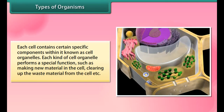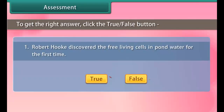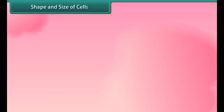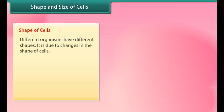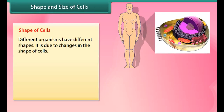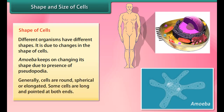Each living cell has the capacity to perform certain basic functions that are characteristic of all living forms — for example, cells of the heart to pump blood, cells of the stomach to digest food. Each cell contains certain specific components within it known as cell organelles. Each kind of cell organelle performs a special function, such as making new material in the cell or clearing up waste material from the cell.